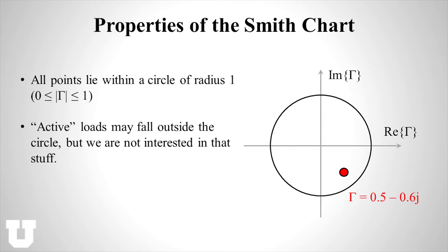With that picture in mind, let's discuss some of the basic properties of the Smith chart. First things first, all points within the Smith chart necessarily land within a circle of unit radius. You'll notice that that's basically an expression of conservation of energy. For any passive load — some load consisting of resistors and capacitors and inductors — I cannot create energy. I can only dissipate some energy in my load and then reflect the rest of it back, but I can never reflect more energy than what I excite the load with, which means all of the allowed values for my reflection coefficient have to fall within this unit circle.